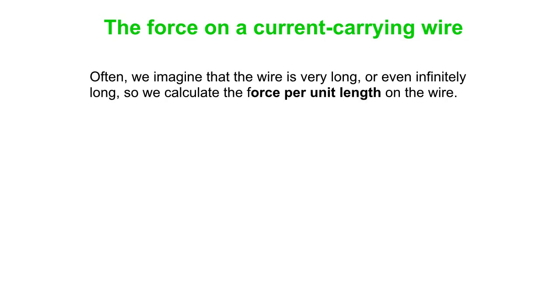Now often we imagine the wire is very long or even infinitely long. So in that case, we calculate the force per unit length on the wire. Instead of F is ILB sine theta, we do force per unit length is IB sine theta. It works in a very similar way to the force on a single charge.